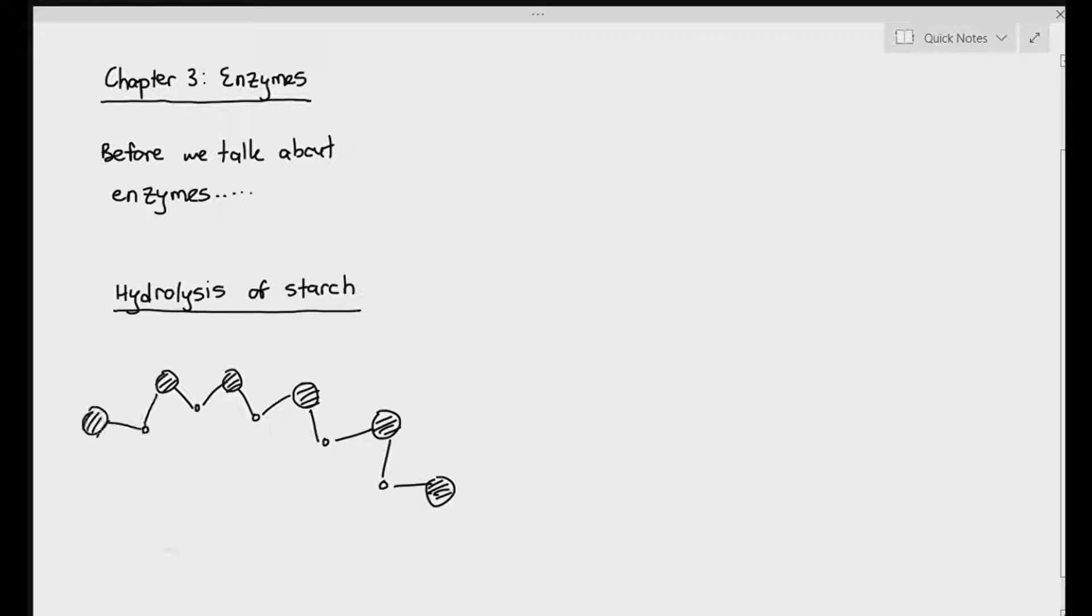I'm drawing out an amylose molecule over here. As you can see, amylose is just basically made up of many alpha-glucose joined together by something known as alpha-1,4-glycosidic bonds. So let's say we want to break the glycosidic bond. To break the alpha-1,4-glycosidic bond, we need to carry out a reaction known as hydrolysis. And what is hydrolysis? Hydrolysis just basically means using water to break the covalent bond, in this case, to break the glycosidic bond.